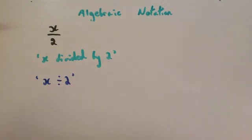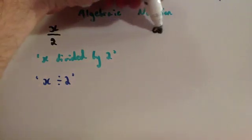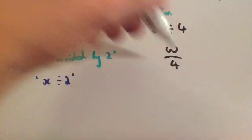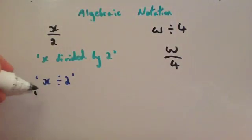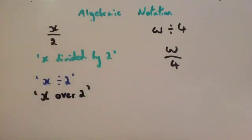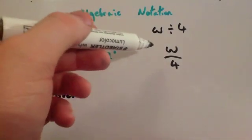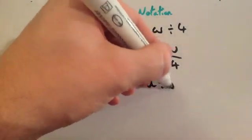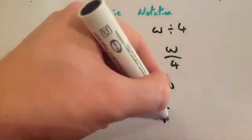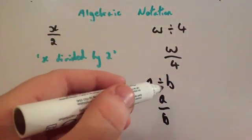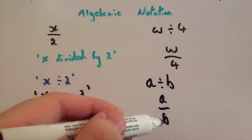For instance, if I had something like w divided by 4, I would write w over 4. It's sometimes read as x over 2. So w over 4 means w divided by 4. If you had something like a divided by b, you have a over b. It's important to realize the number you're dividing goes on the numerator, and the number you're dividing by goes on the denominator.